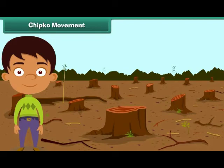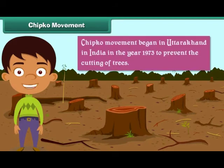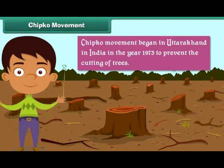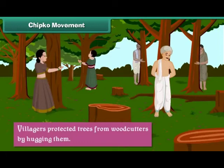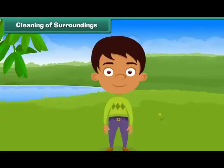Chipko Movement. The Chipko Movement began in Uttarakhand, India in the year 1973 to prevent the cutting of trees. It was called the Chipko Movement because during the movement, villagers protected trees from woodcutters by hugging them.